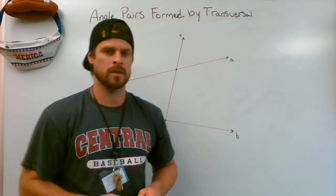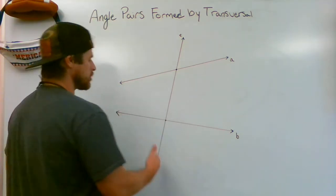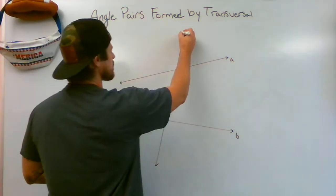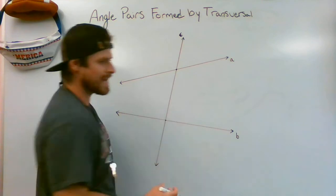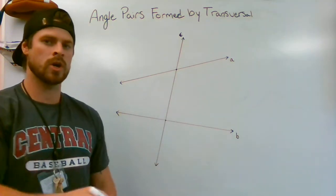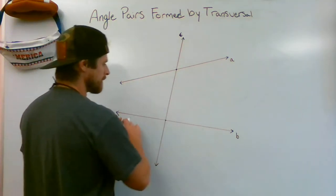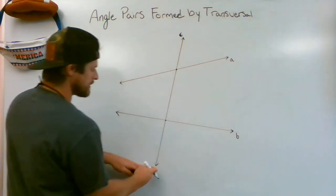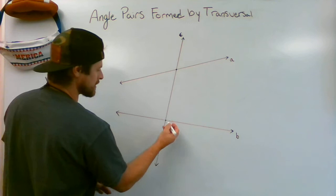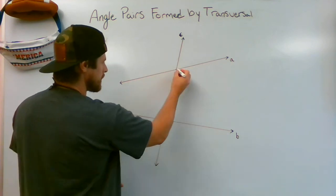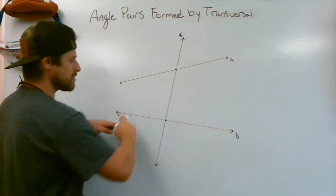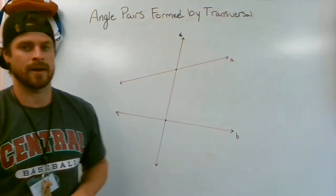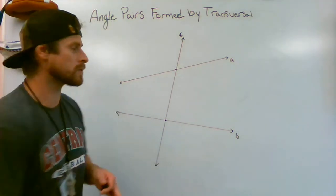Okay, a transversal — line T here is the transversal. We call a transversal a line that intersects two coplanar lines. So we have line B and line A, and T is the transversal because it is intersecting here and here — it's intersecting these two coplanar lines at distinct points.